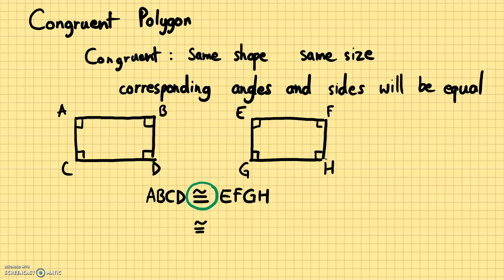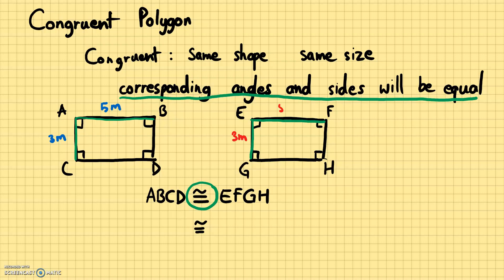This sign right here means congruent to — it's an equal sign with a squiggly line on top. So because we know that ABCD and EFGH are congruent, let's say we know this side is 5 meters and this side is 3 meters. Can we also find out what the sides of EFGH would be? Well, the corresponding sides will be equal, so the corresponding side for each side of ABCD will match a side in EFGH.